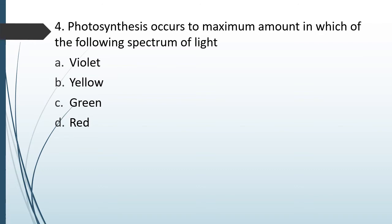Question No. 68: Photosynthesis occurs to a maximum amount in which of the following spectra of light? Options: violet, yellow, green, or red. The correct answer is Option D — the red spectrum.